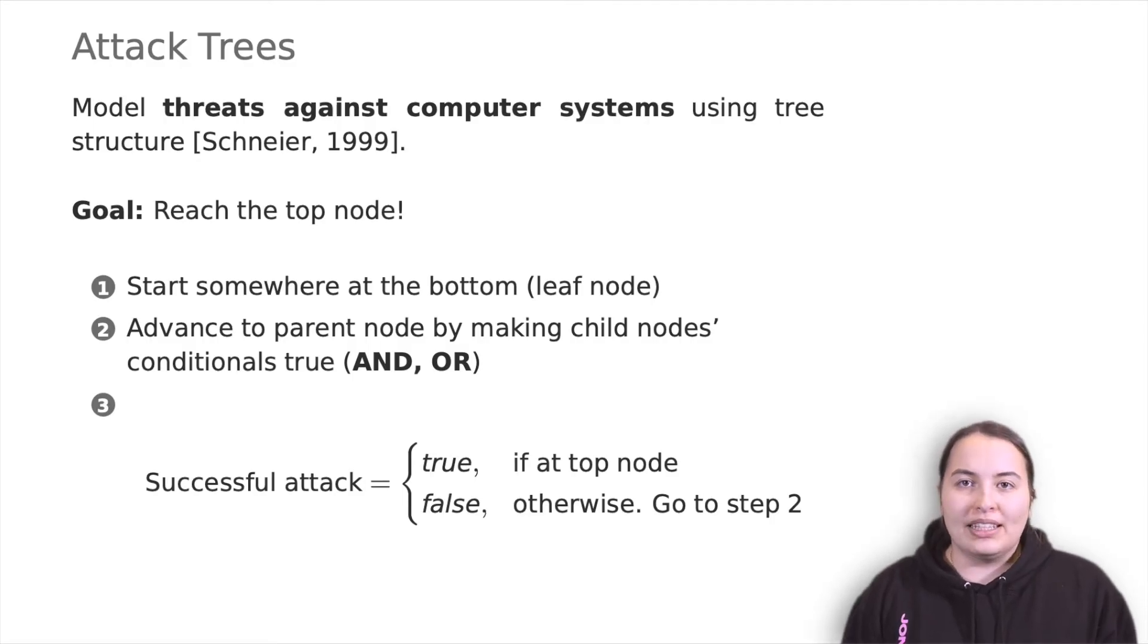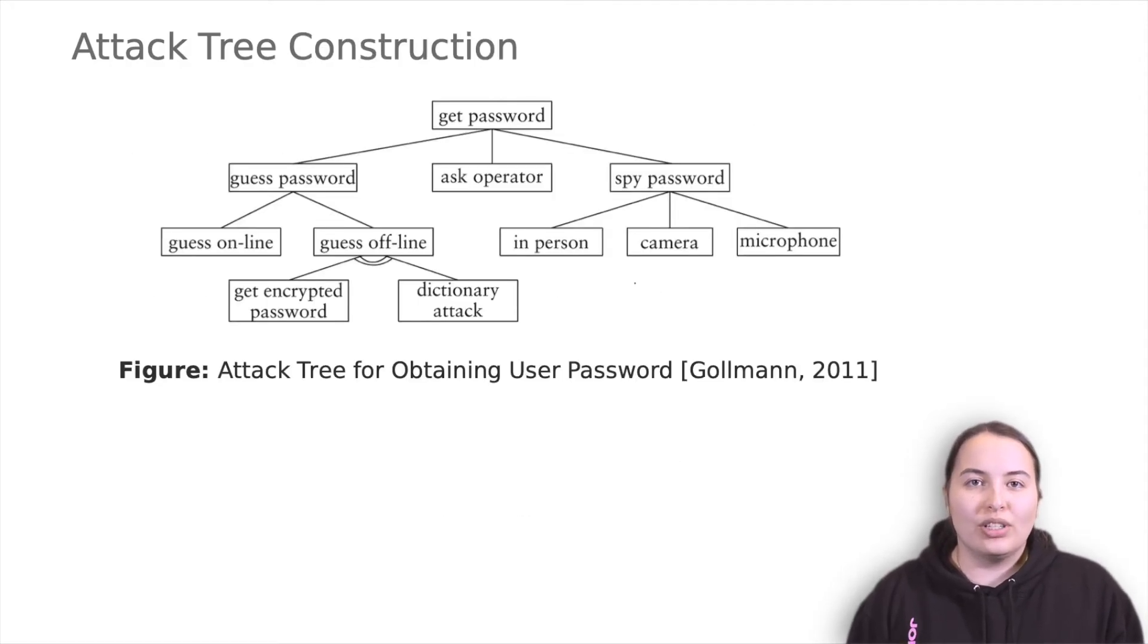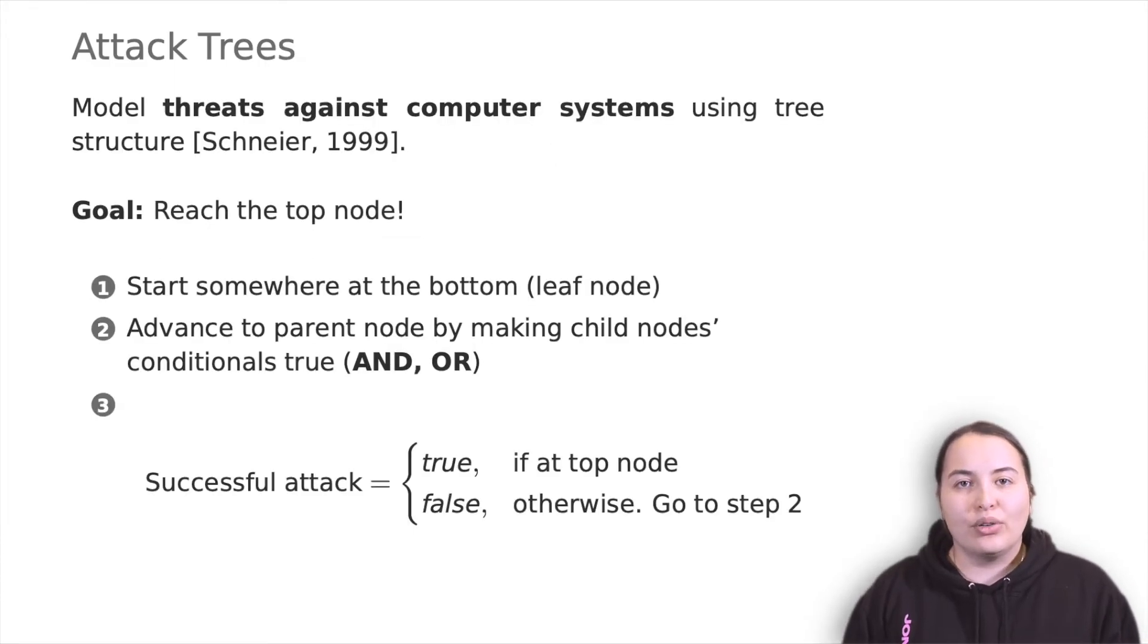Basically, you represent attacks against a system in a tree structure with the goal as a root node and different ways of achieving the goal as leaf nodes. Every node is a possible weak link of the system, which leads directly to the goal or to another node.